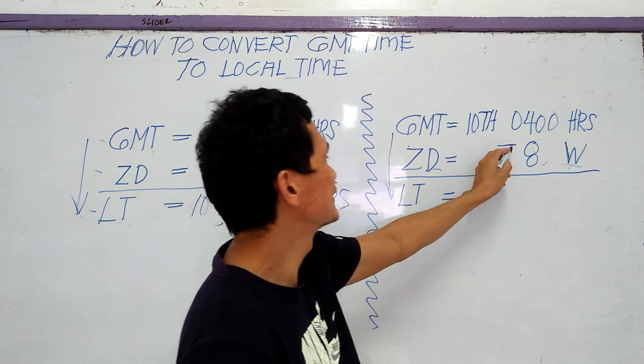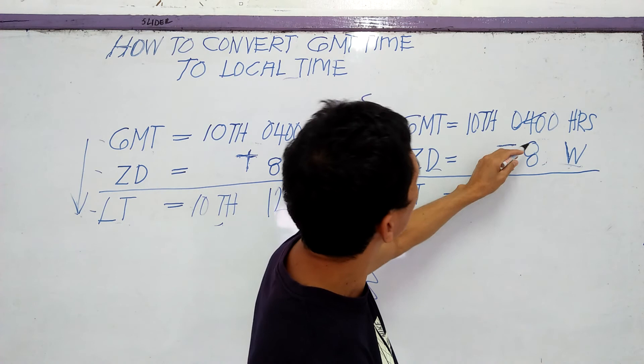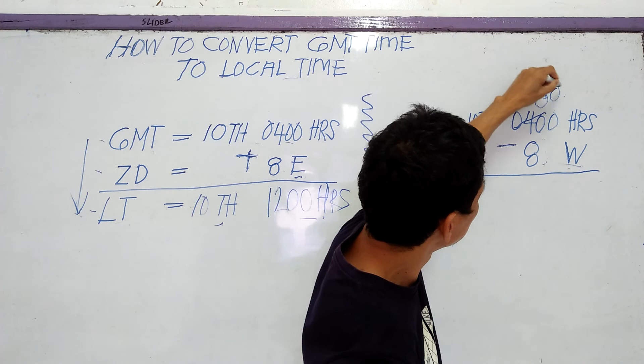So subtract. We cannot subtract the 8 from 4, so we will add 24. This will become 28.